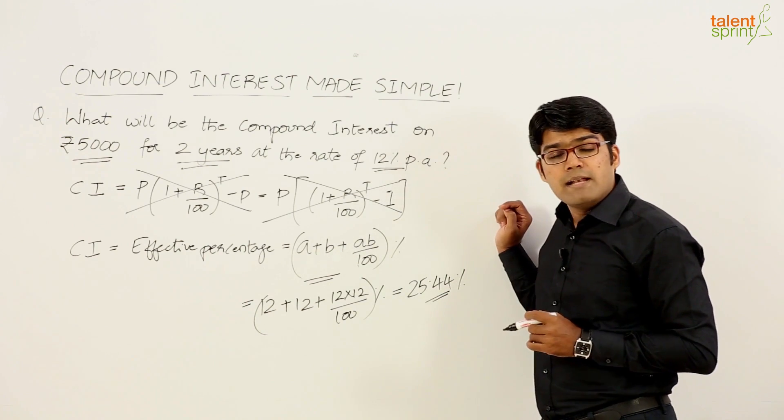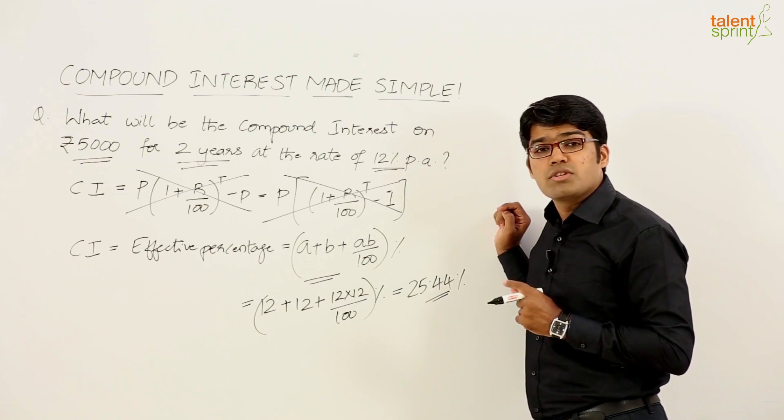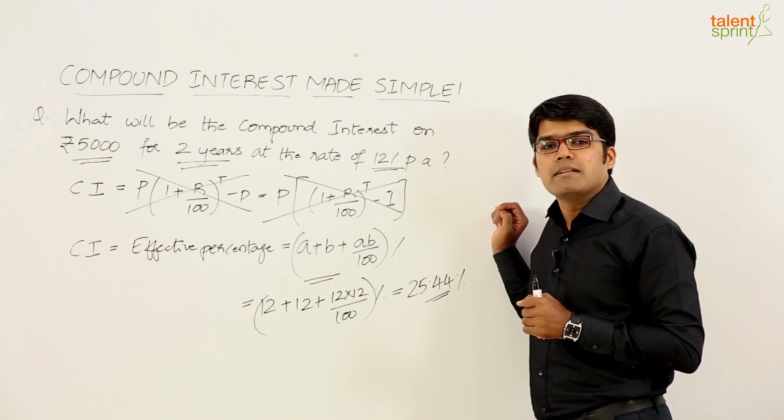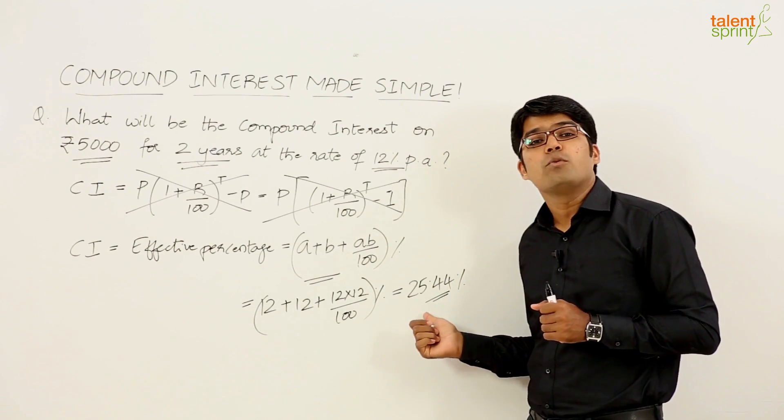This helps us arrive at a conclusion that the compound interest for 2 years at the rate of 12 percent per annum is going to be 25.44 percent.